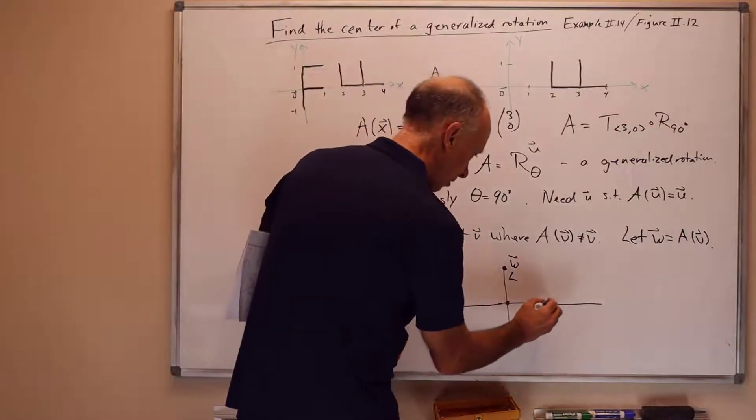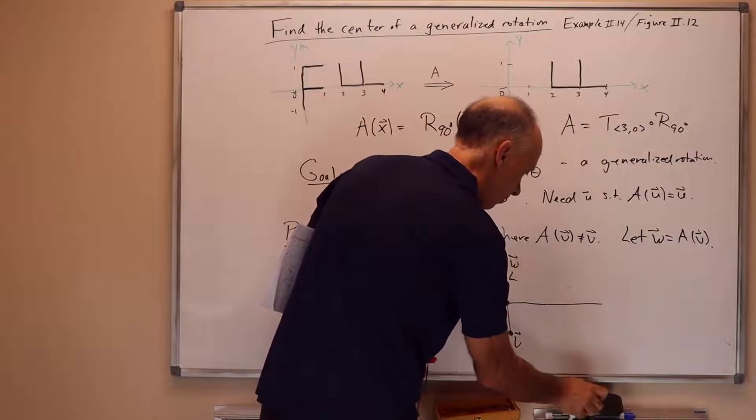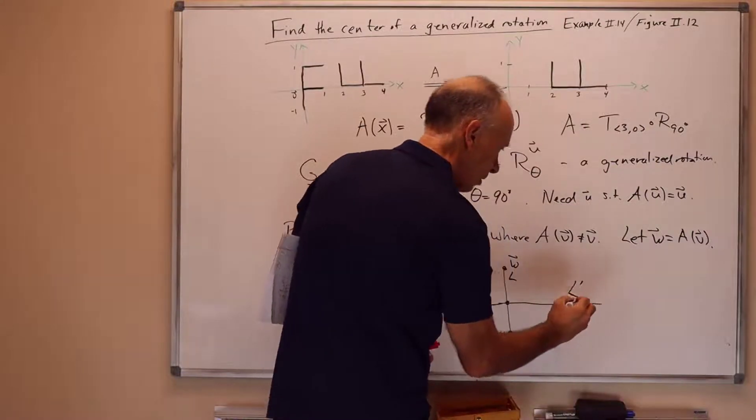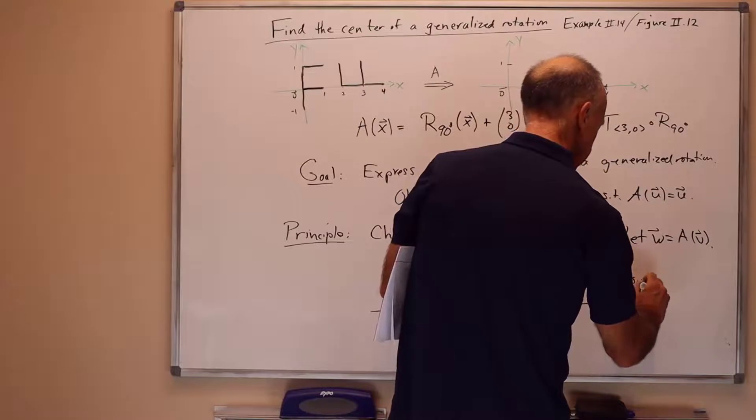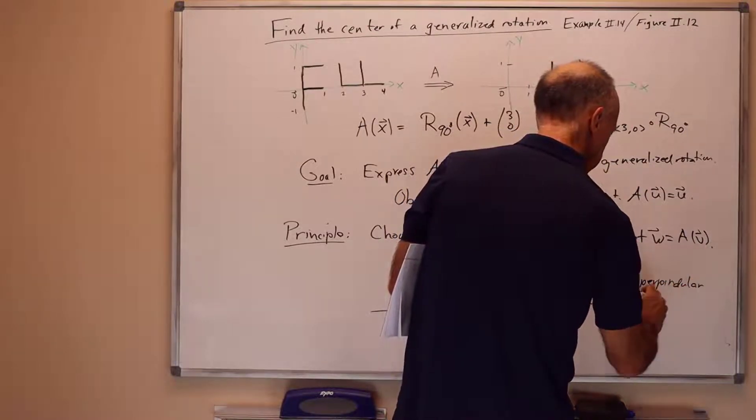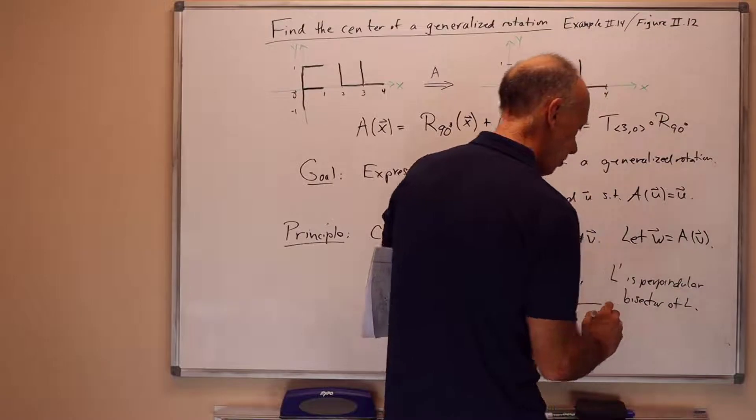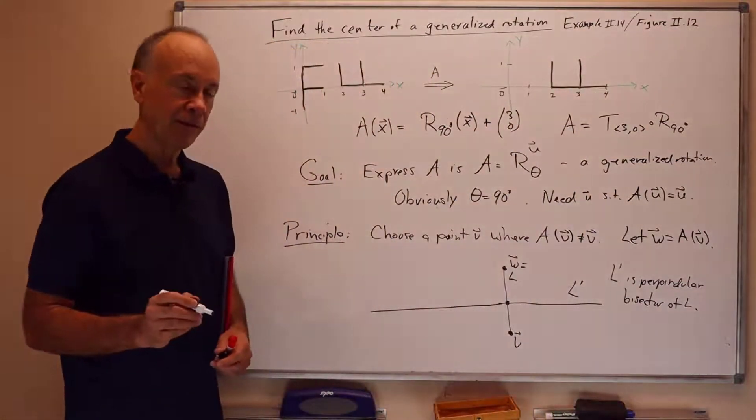And I'll call that perpendicular bisector l prime. So l prime is the perpendicular bisector of l, where l is the line segment joining v and w.